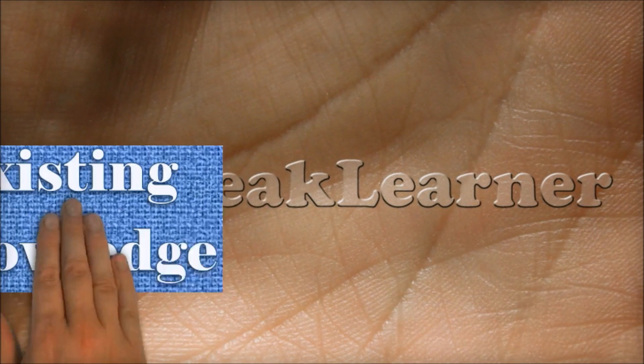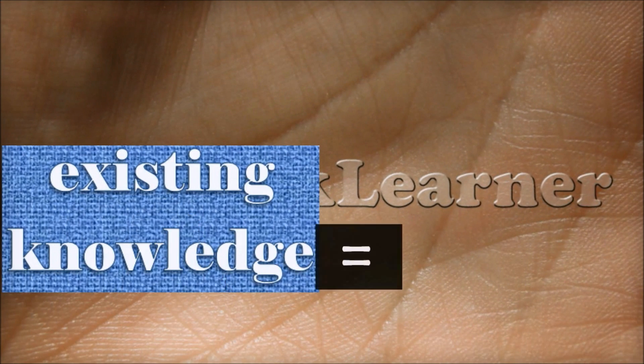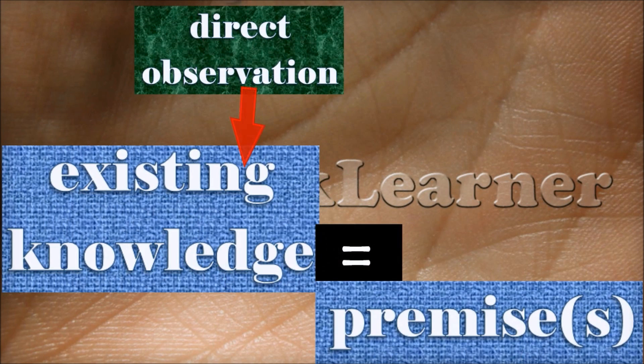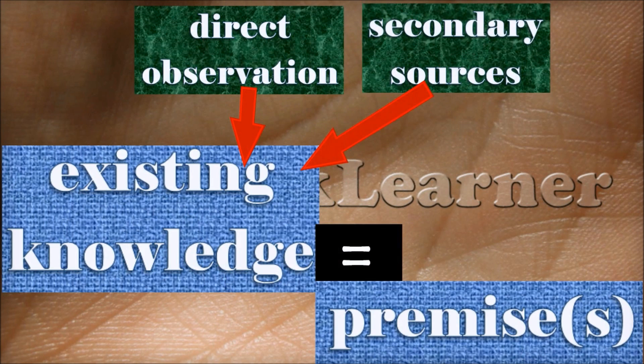Second, the existing knowledge used here is also called premise and comes from either direct observation or secondary resources.